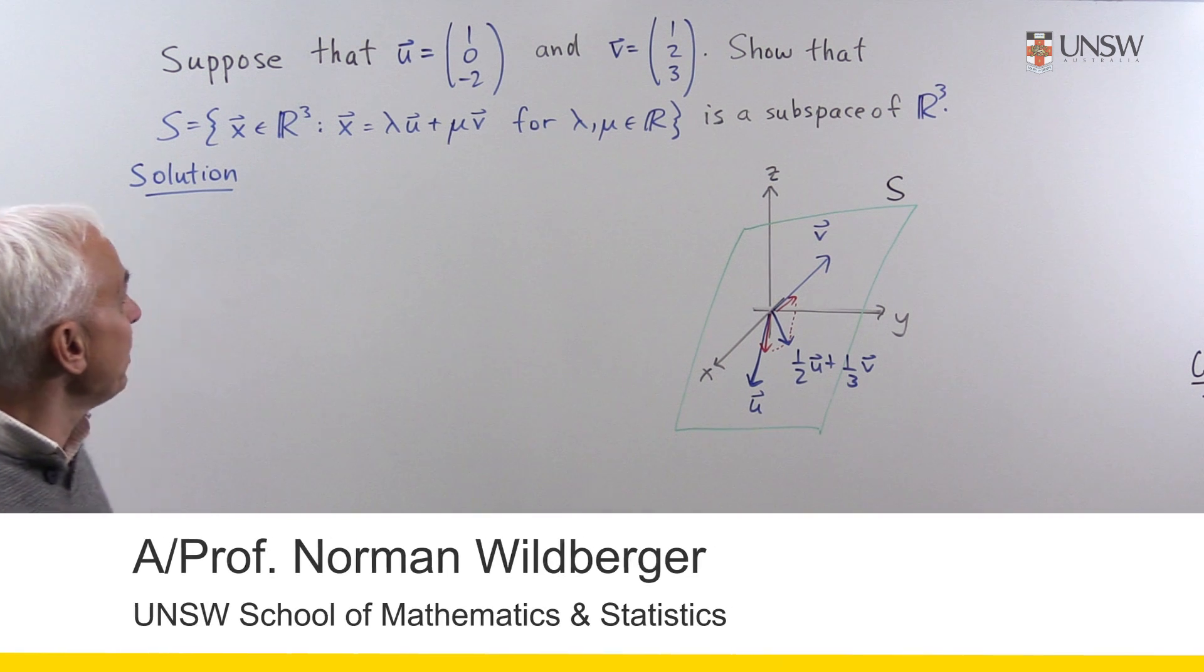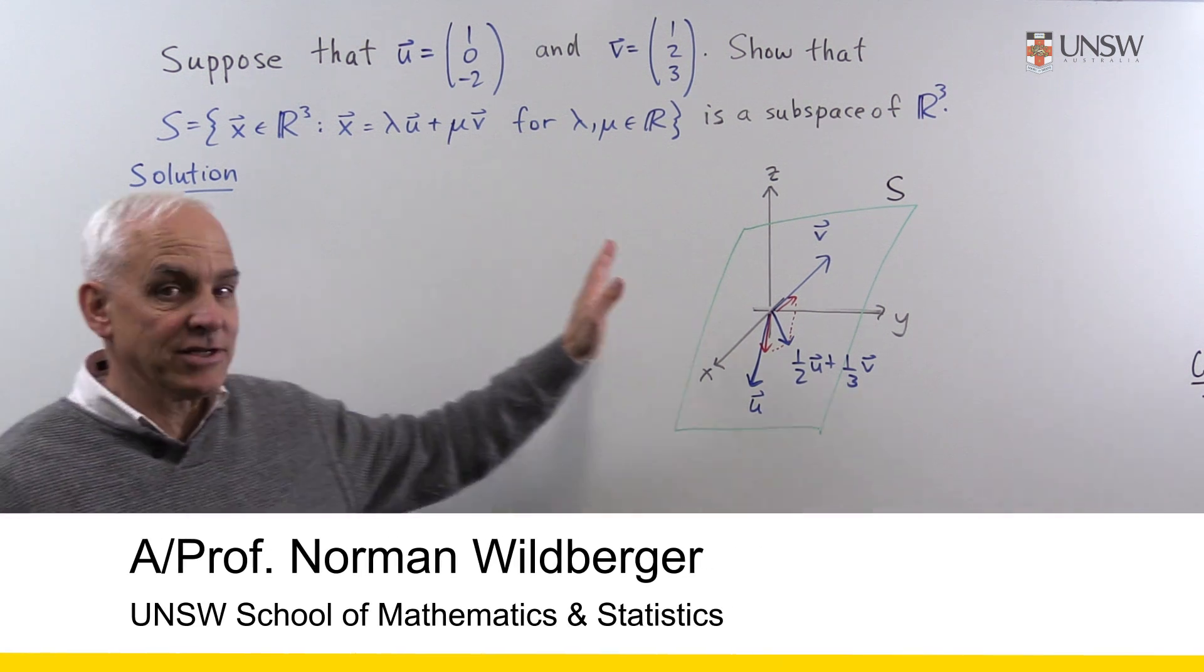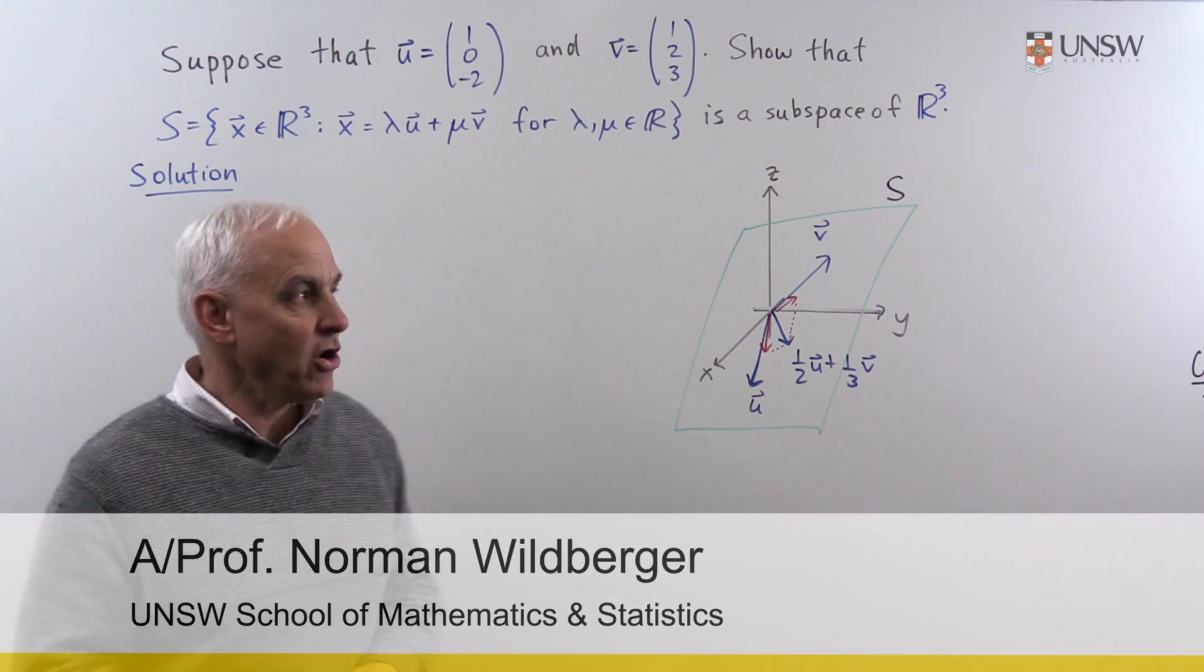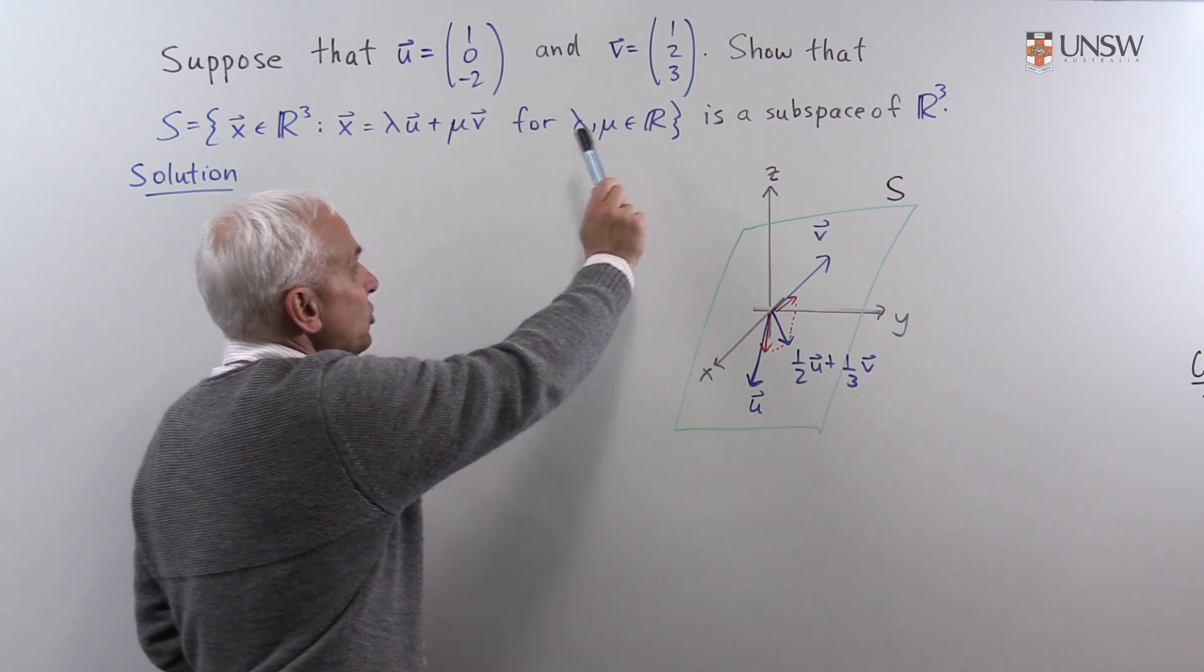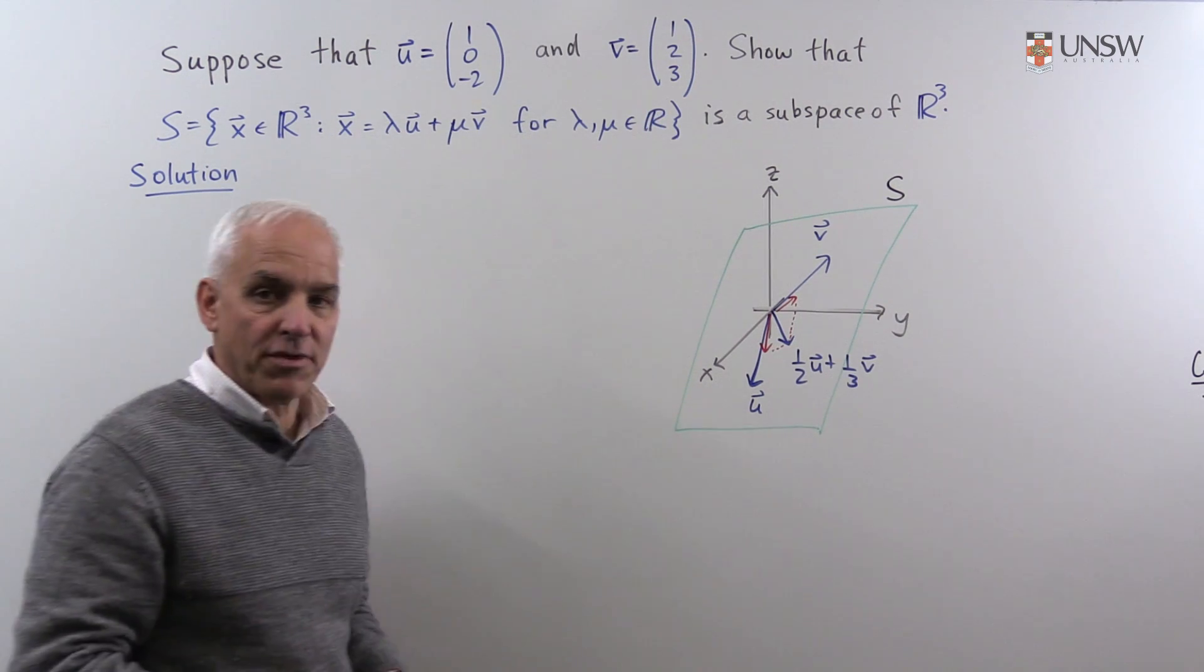In this problem, we're going to be looking at a subspace of three-dimensional space R³. The question is, suppose that u equals the vector (1, 0, -2), and v is the vector (1, 2, 3).